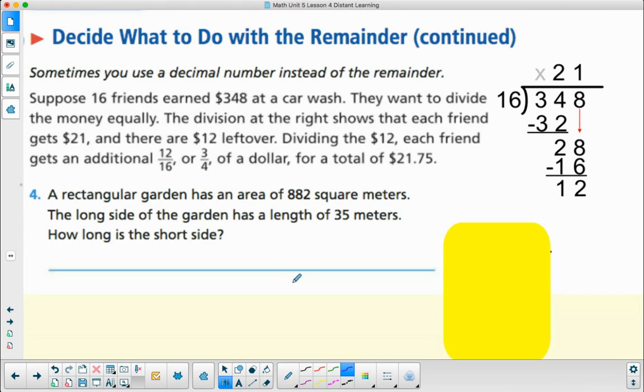Another thing to do with remainders is to make a decimal. Suppose 16 friends earned $348 at a car wash. They want to divide the money equally. The division at the right shows that each friend gets $21. $348 divided into 16 equal groups would be $21, but they still have $12 left. Dividing the 12, each friend gets an additional 12 sixteenths. 12 sixteenths, that's what we just learned in making it a fraction.